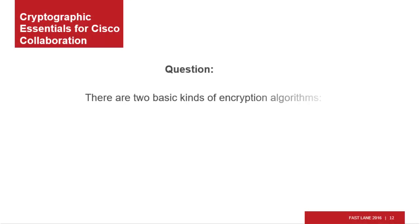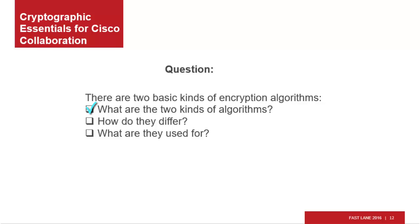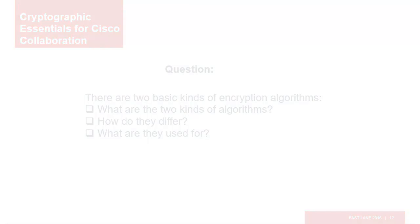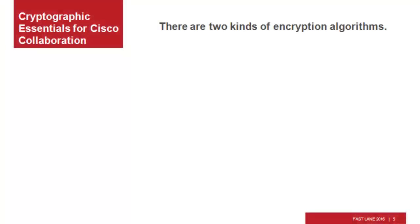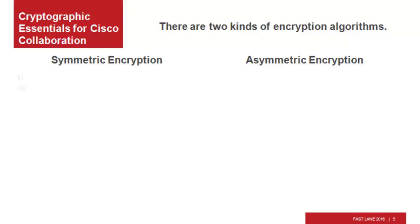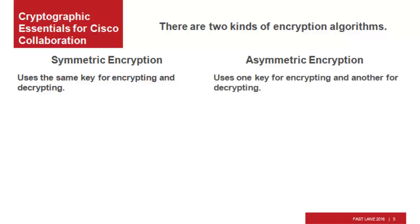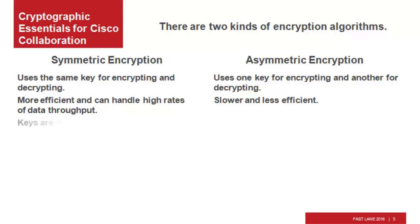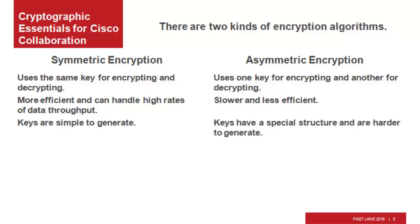There are two basic kinds of encryption algorithms used in communications. Do you know what the two kinds are, how they differ, and what they are used for? There are two kinds: symmetric encryption algorithms and asymmetric encryption algorithms. Symmetric encryption uses the same key for encrypting and decrypting. Asymmetric encryption uses one key for encrypting and another for decrypting. Symmetric encryption is more efficient and can handle high rates of data throughput, while asymmetric encryption is slower and less efficient. Symmetric keys are simple to generate, while asymmetric keys have a special structure that makes them harder to generate.